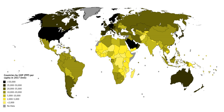Gross domestic product is a monetary measure of the market value of all the final goods and services produced in a period of time, often annually or quarterly. Nominal GDP estimates are commonly used to determine the economic performance of a whole country or region, and to make international comparisons.